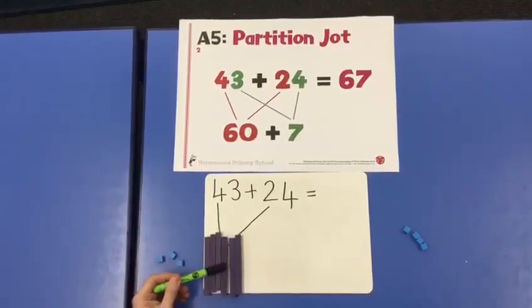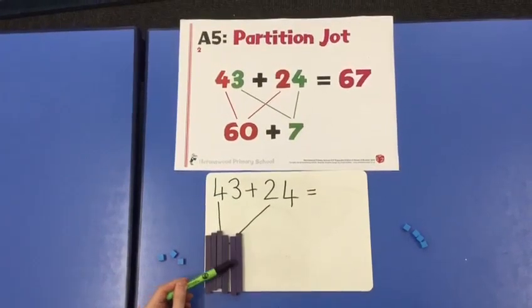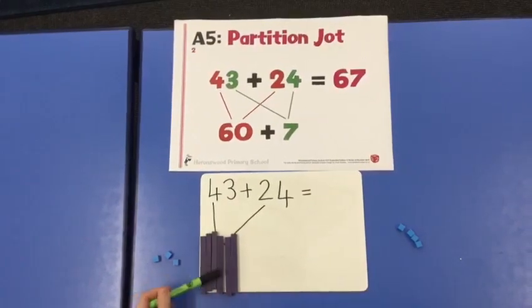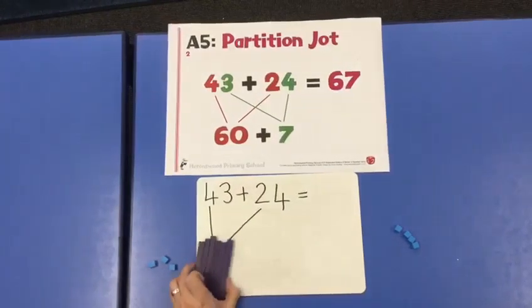1, 2, 3, 4, 5, 6 tens. 10, 20, 30, 40, 50, 60. 40 add 20 equals 60.